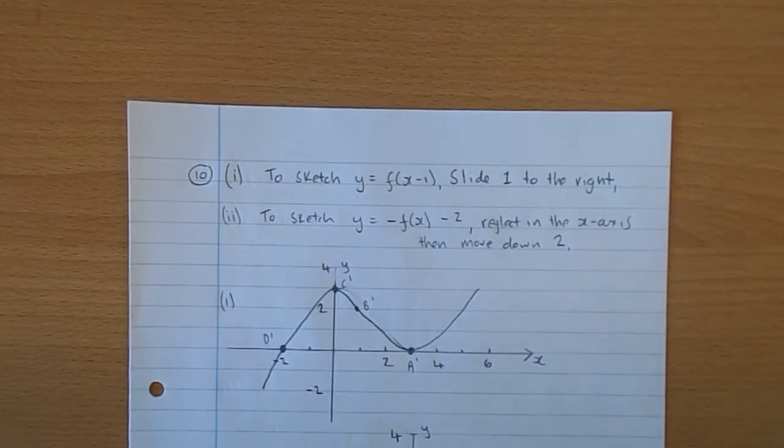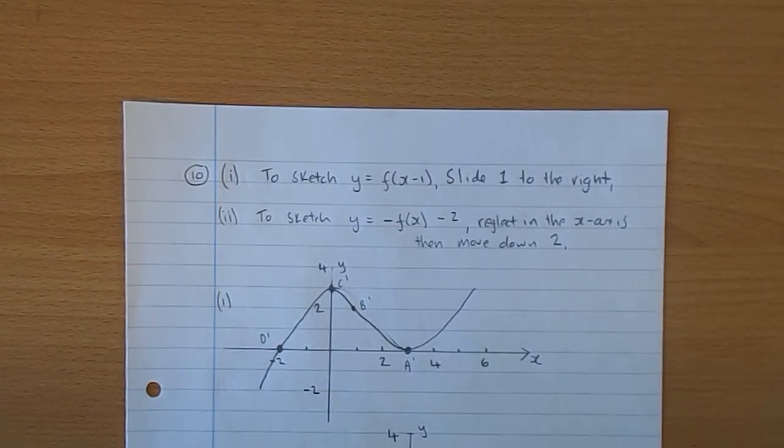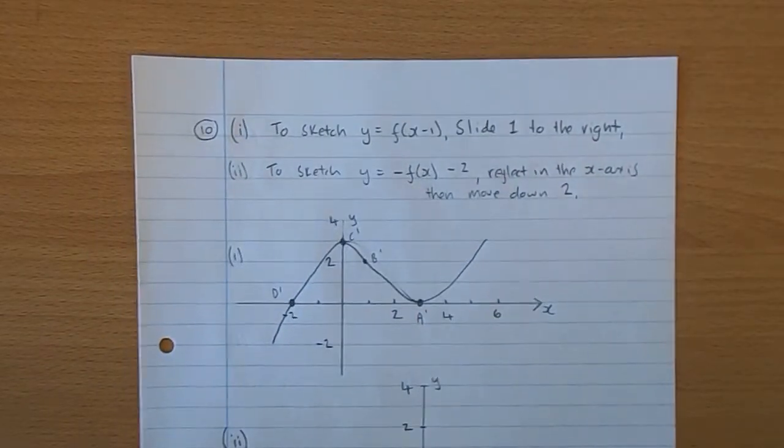Well that just means you slide it 1 to the right. And for the second part, y equals negative f of x minus 2, you reflect it in the x-axis and move it down 2. So there's my two efforts of that one there.